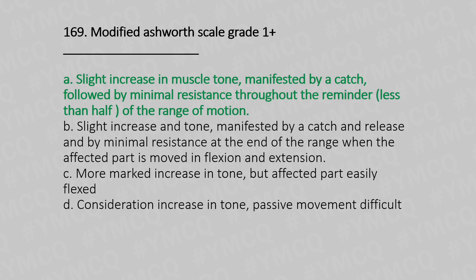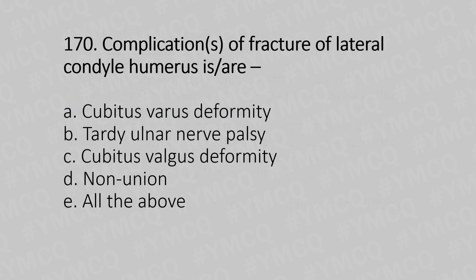Question 170: Complications of fracture of lateral condyle of humerus — Option A: Cubitus varus deformity, Option B: Tardy ulnar nerve palsy, Option C: Cubitus valgus deformity, Option D: Nonunion, Option E: All of the above. And the answer is Option E, all of the above.